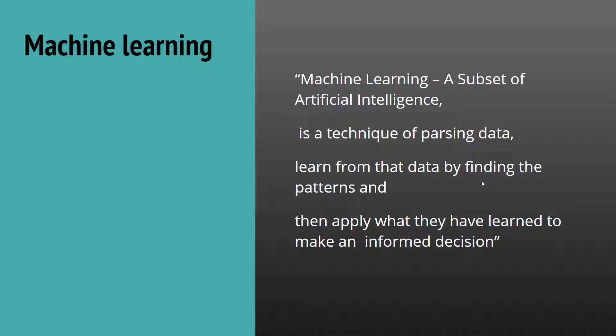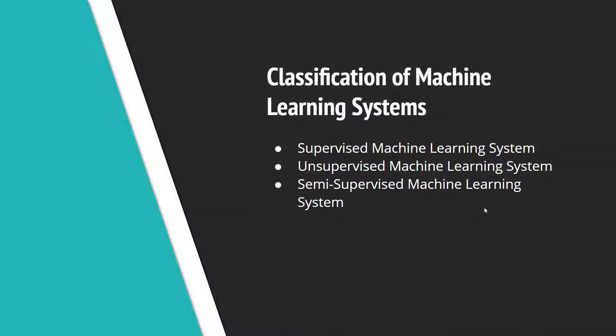We can classify the Machine Learning System in many ways. One way we classify Machine Learning Systems is by how the data is used. On the basis of data used, we can classify the Machine Learning System into three types: Supervised, Unsupervised, and Semi-Supervised Machine Learning Systems.